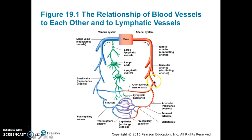Most of the time, the muscular arteries proceed to arterioles, which are very small diameter vessels. They then lead to terminal arterioles, and then a meta-arteriole. At the end of the meta-arteriole is a pre-capillary sphincter, which controls the blood flow from the arterial system into the capillaries. Capillaries, shown here in purple, are the exchange vessels. This is where oxygen leaves the blood for the tissues and where carbon dioxide enters the blood from the tissues.